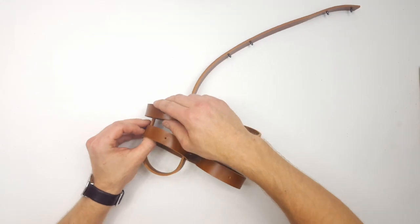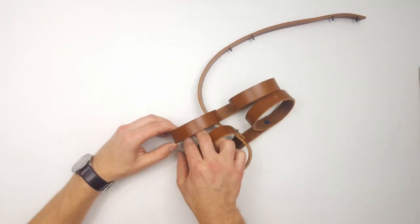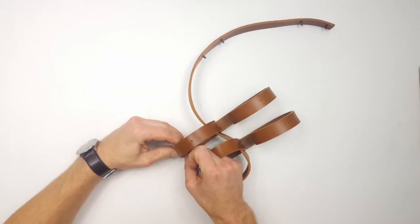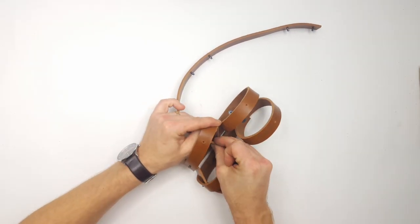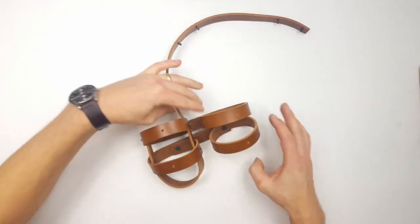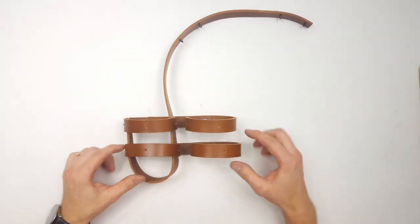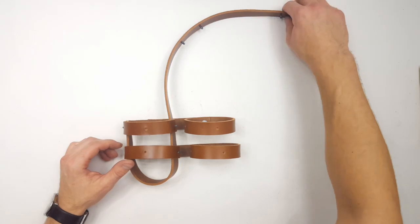So take this one and push the strap through like that. We have this rivet going in here in this hole, this rivet in that hole. And there we have one of the sides to this piece.